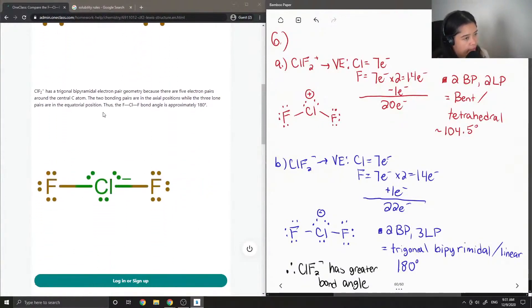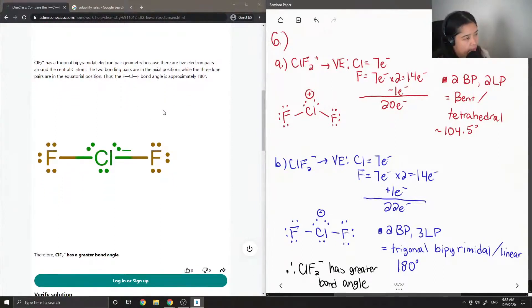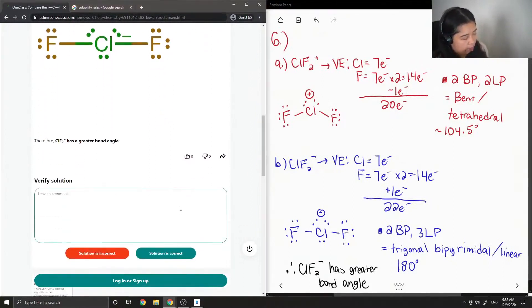The negatively charged compound has a trigonal bipyramidal electron pair geometry, because there are five electron pairs around the central chlorine atom. The two bonding pairs are in axial positions, while the three pairs are in equatorial positions. Thus, the fluorine-chlorine-fluorine bond angle is approximately 180 degrees. Yep, so this solution is correct.